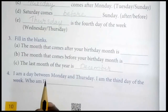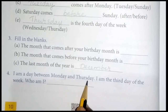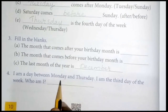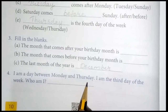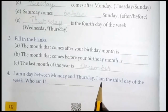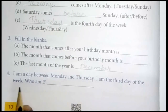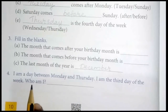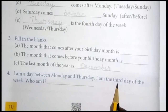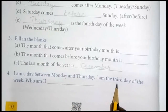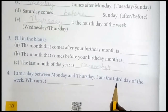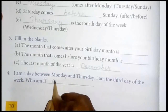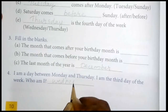Next question: I am a day between Monday and Thursday. I am the third day of the week. Who am I? Count: Monday, Tuesday, Wednesday. Wednesday is the third day. So write here: Wednesday.